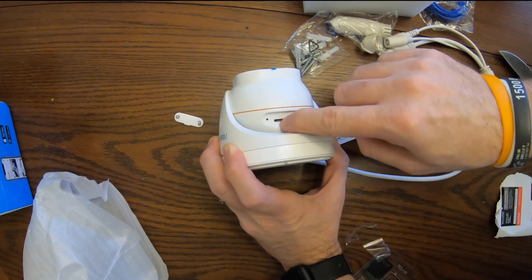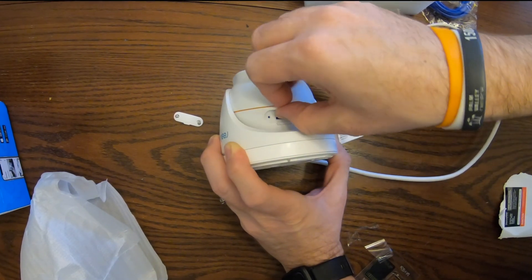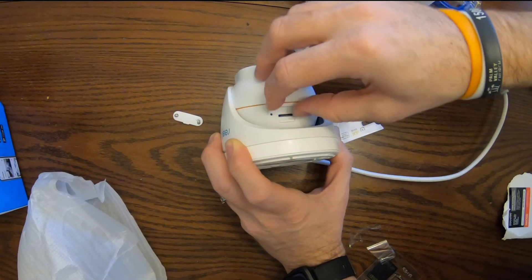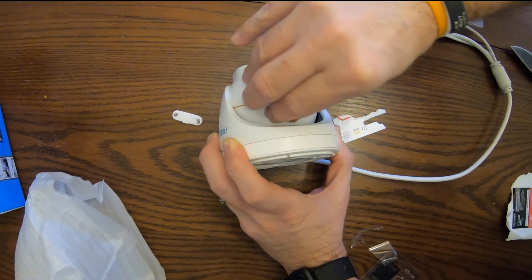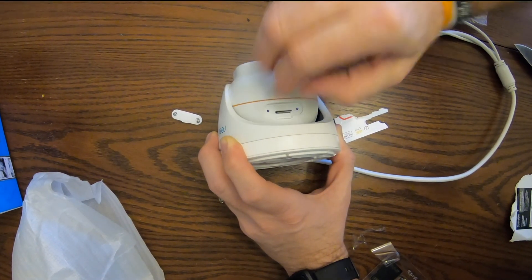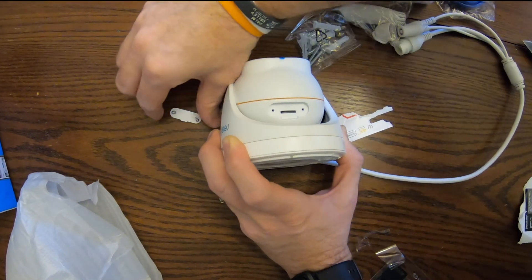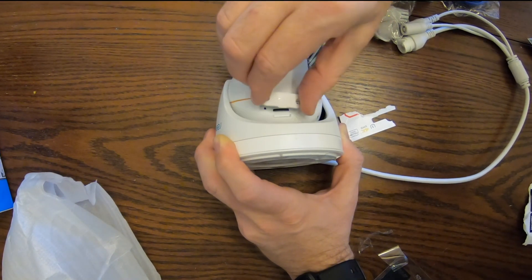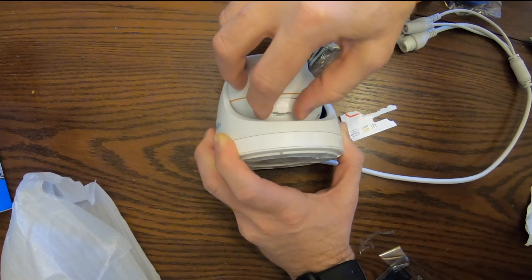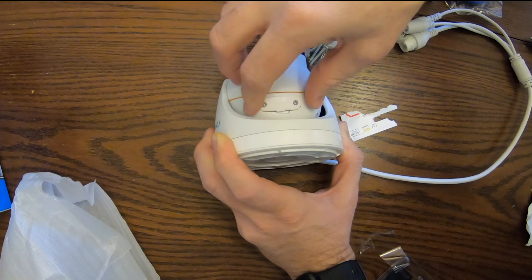If you push it again, it'll pop out and you can remove it right there. Just push it back in for that click. Now we put the cover back on and screw that back together.